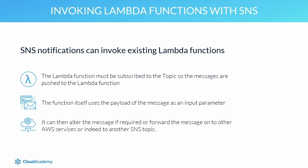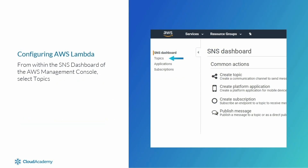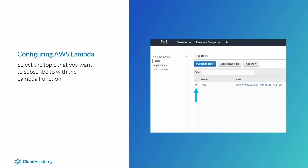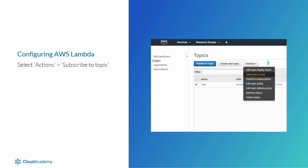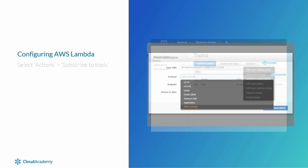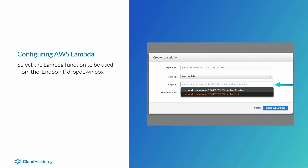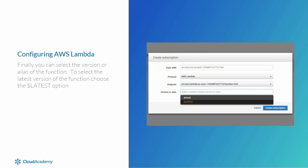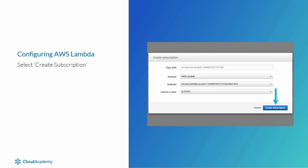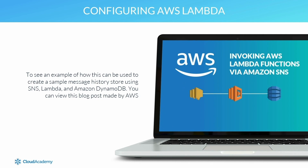To configure AWS Lambda to work with a topic, from within the SNS dashboard of the AWS Management Console, select Topics. Select the topic you want to subscribe to with the Lambda function, then select Actions and Subscribe to Topic. Using the Protocol menu, select the AWS Lambda option. Then select the Lambda function to be used from the Endpoint drop-down box. Finally, you can select the version or alias of the function — choose the Latest option — and select Create Subscription. You can also view an AWS blog post showing how to create a sample message history store using SNS, Lambda, and Amazon DynamoDB.